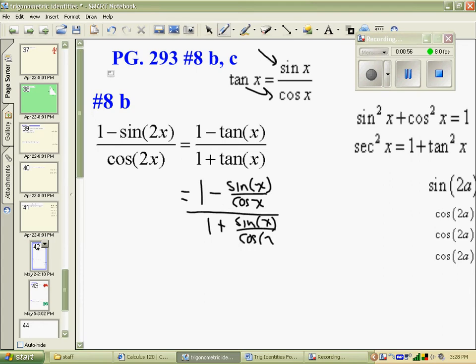And then while I'm at it, I recognize that adding these up, I'm probably going to need a common denominator, so I'm going to write 1 as cos over cos on top and bottom.